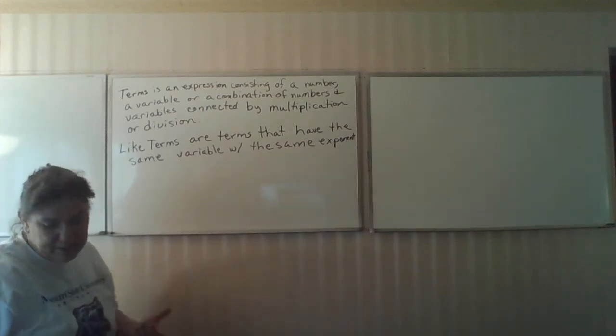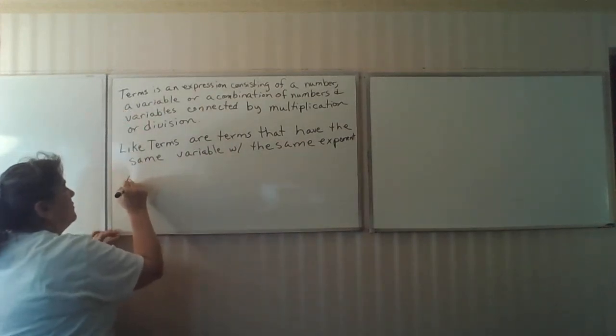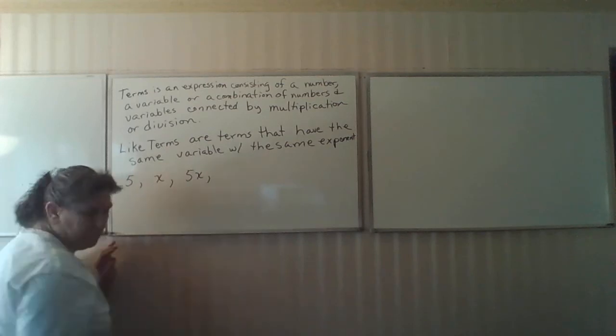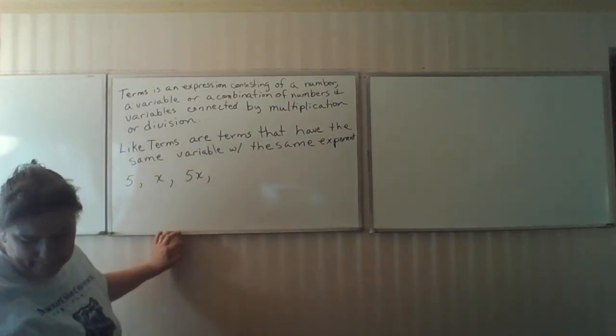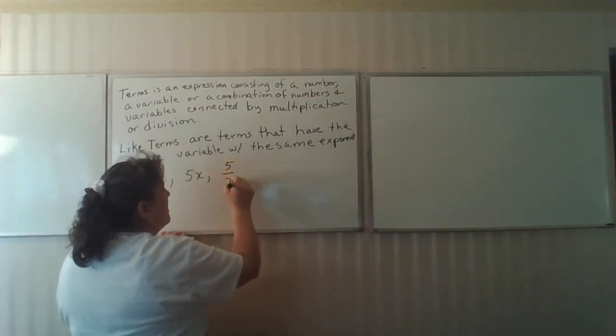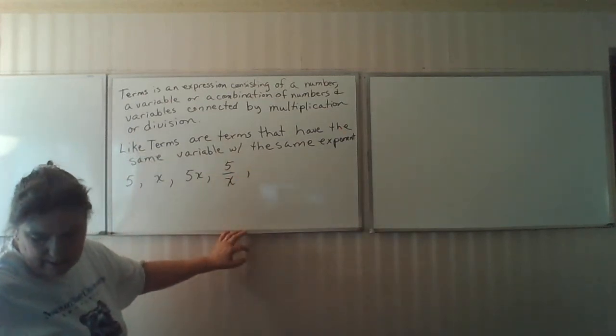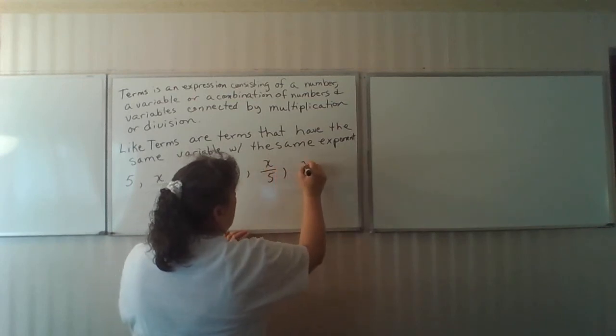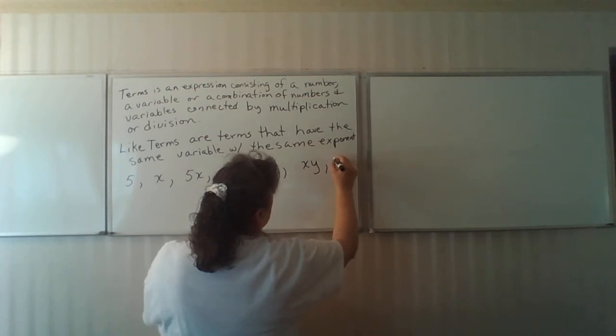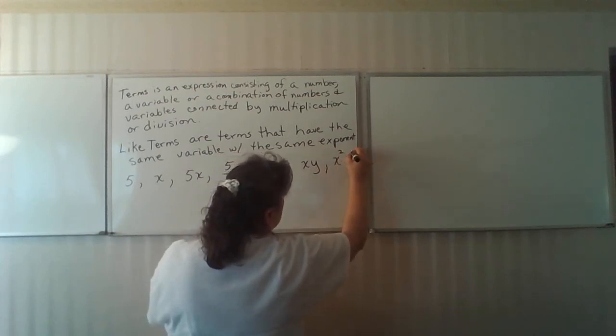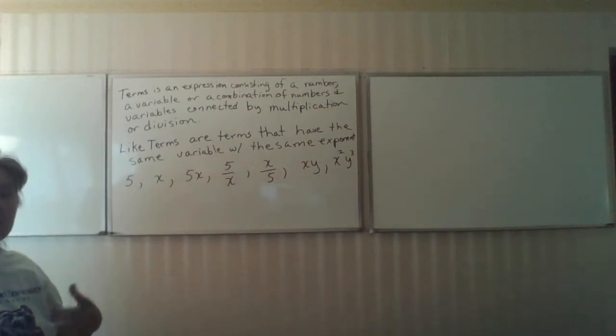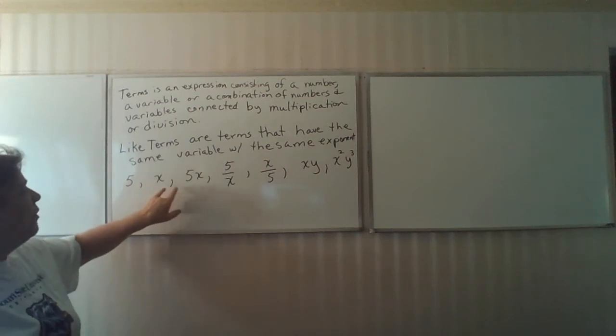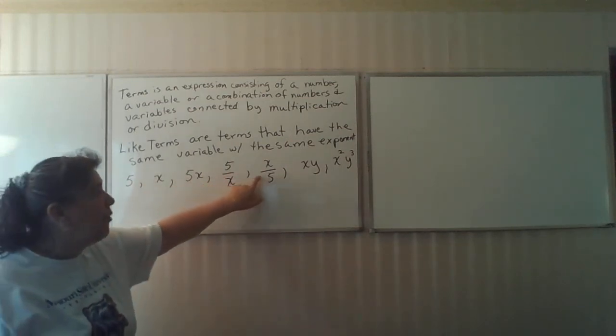Let's look first at just simple terms. Here's an example of terms: 5x, 5 times x, 5 divided by x, x divided by 5, x times y, x squared, y to the third power. All those things are terms, because they're individual or they're connected by multiplication or division.